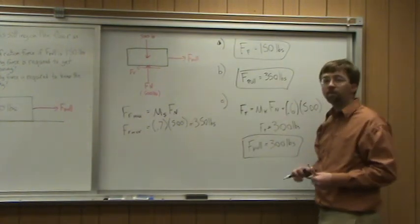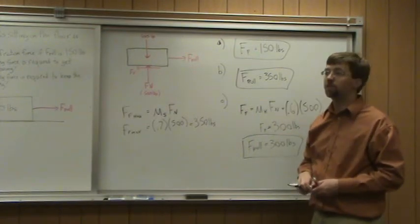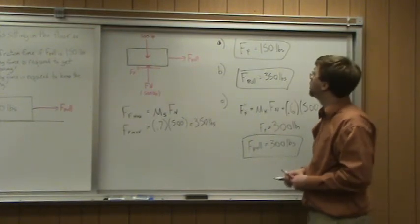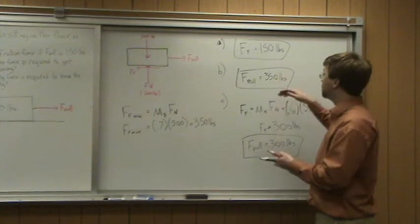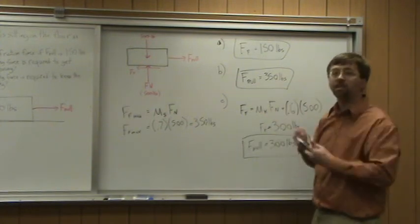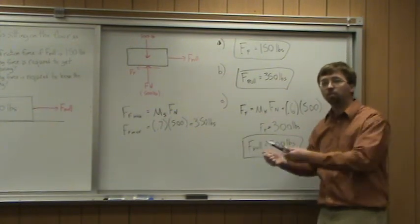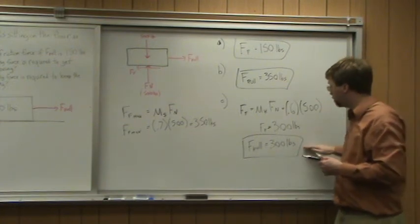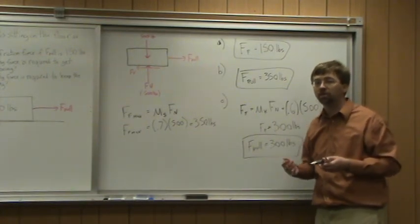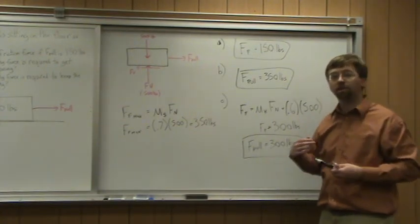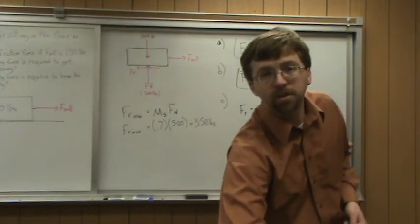So, if F-pull is 150 pounds, my friction force opposing that is 150 pounds. In order to get it moving in the first place, I need to pull with at least 350 pounds of force. And then, once it's sliding, I can keep it sliding at a constant rate with a 300 pound force. With that, we've solved our problem. Thank you for watching, and I hope to see you again.